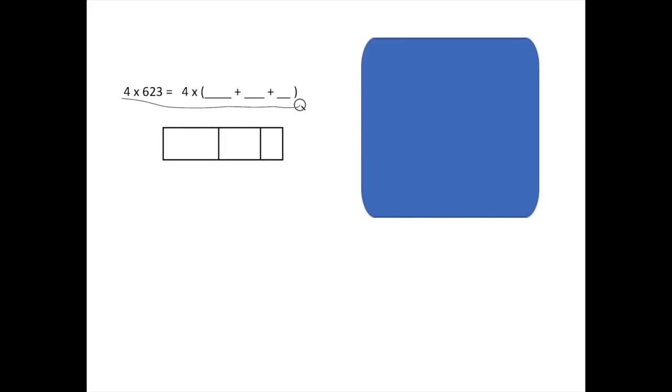So before we solve our problem, we always have to break it apart into expanded form. So right now on your board, what I would like for you to do is ignore the rectangle for now. But what I want you to do is to expand the number 4 times 623. So on your board, I want for you to write 4 times blank plus blank plus blank. And in those blanks, I want for you to expand 623. Pause your video and go ahead and expand 623. Go.